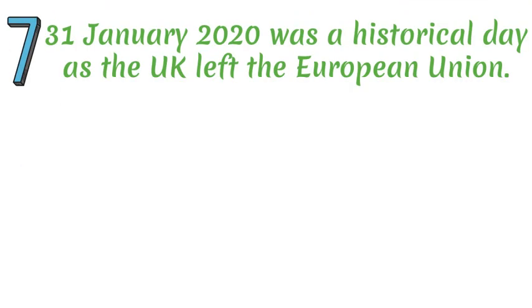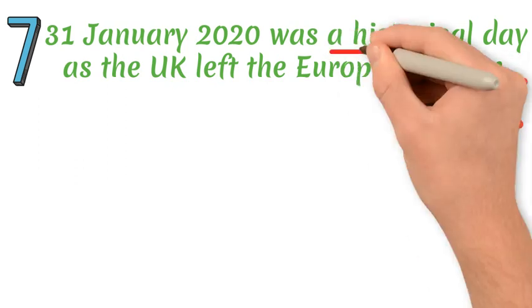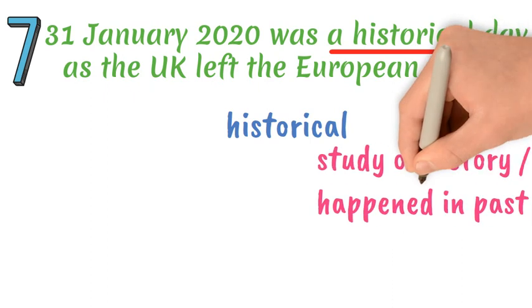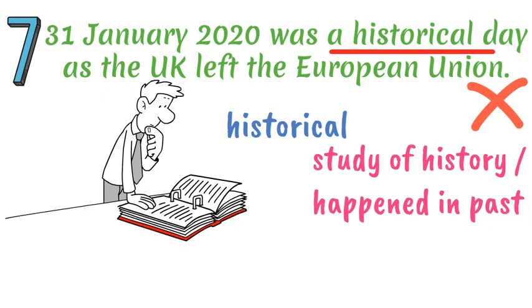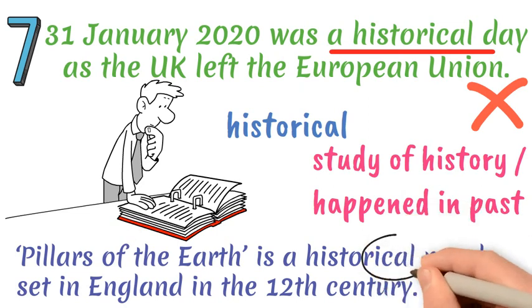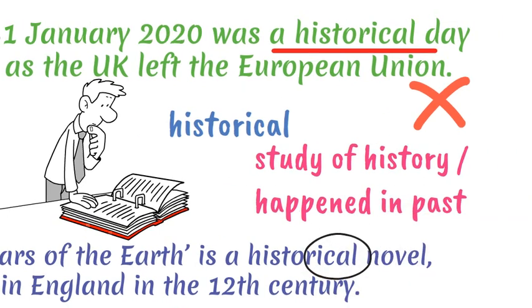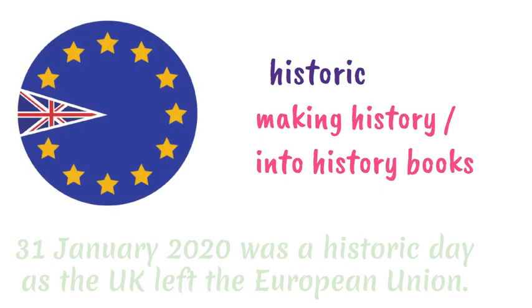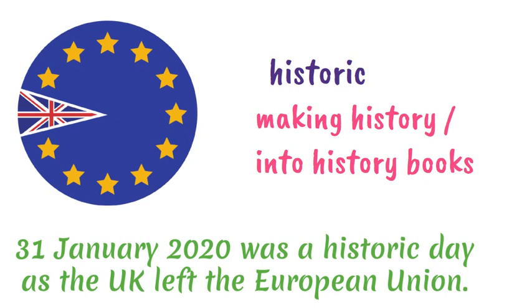Mistake number seven. The adjective 'historical' refers to something that is connected to the study of history or that happened in the past. However, we use 'historic' to describe something that was making history and will go into the history books for good or bad. For example: 'The 31st of January 2020 was a historic day as the UK left the European Union.'